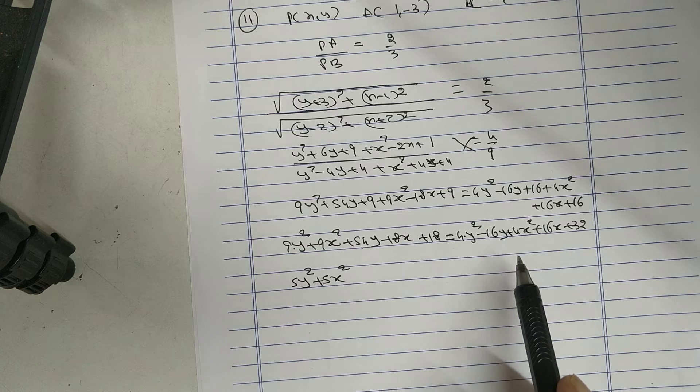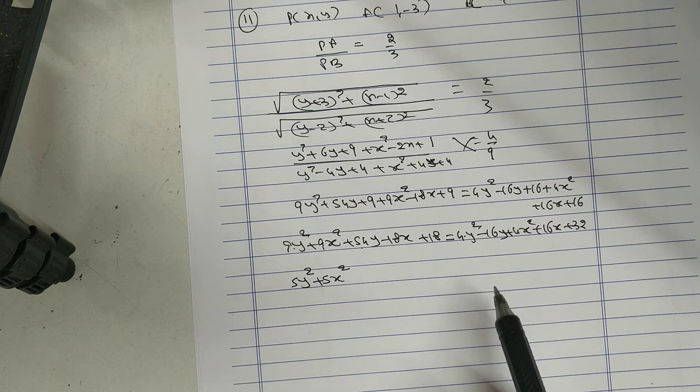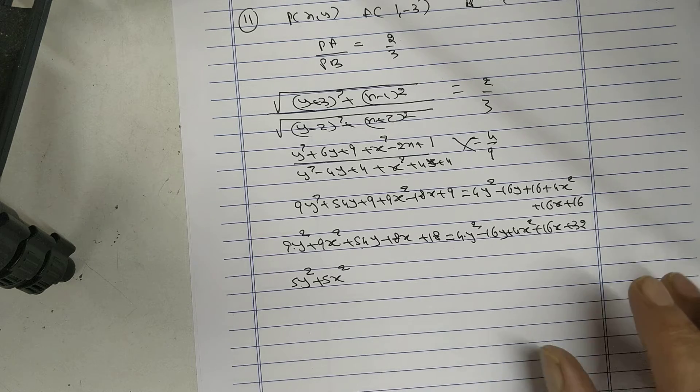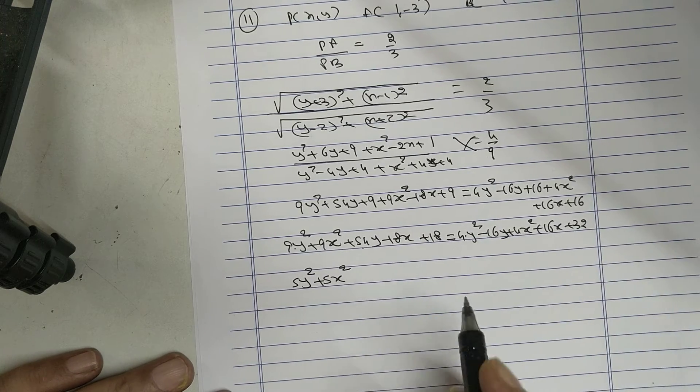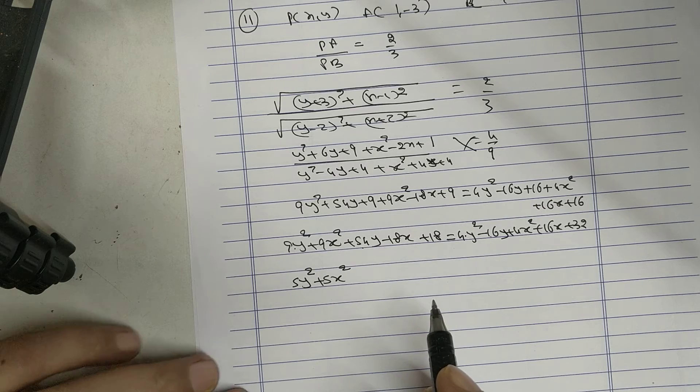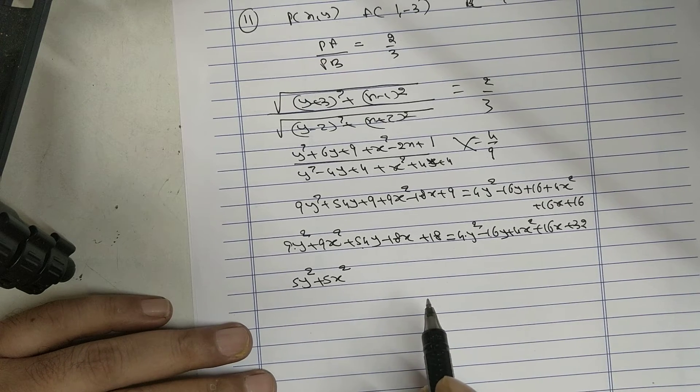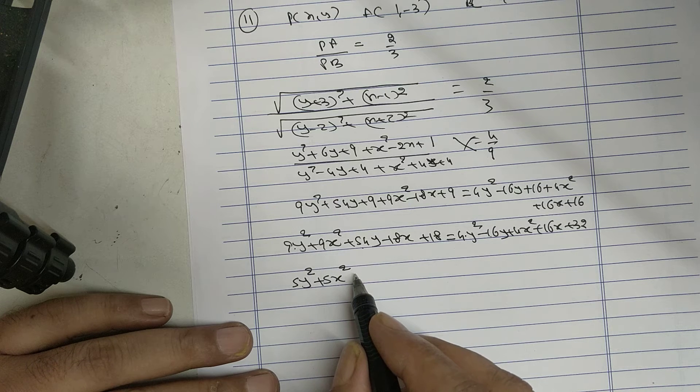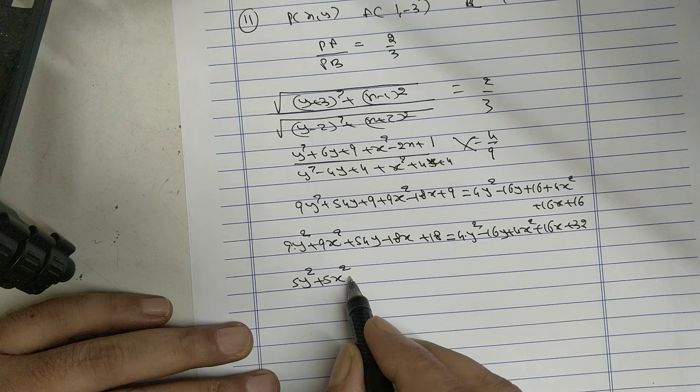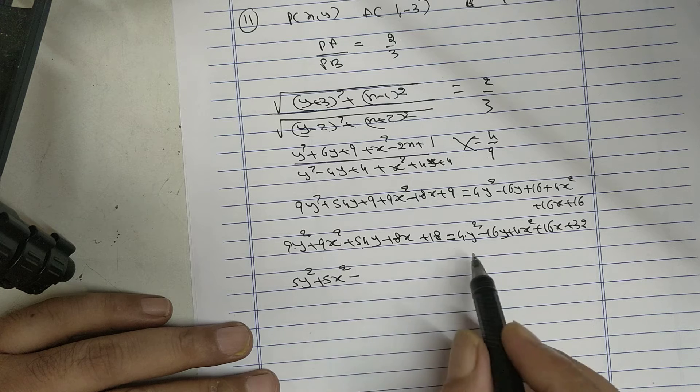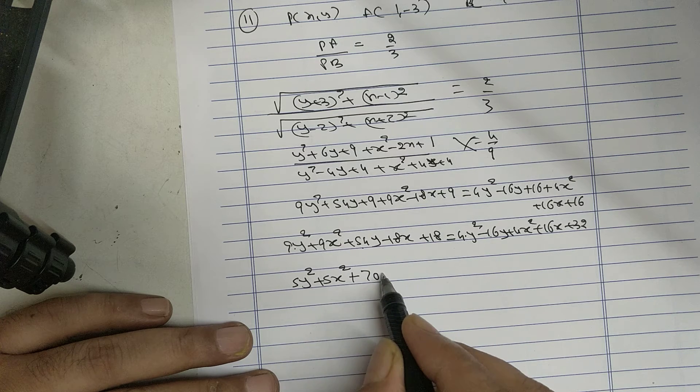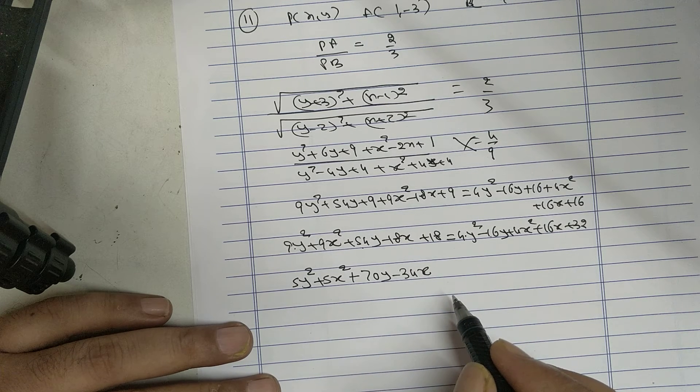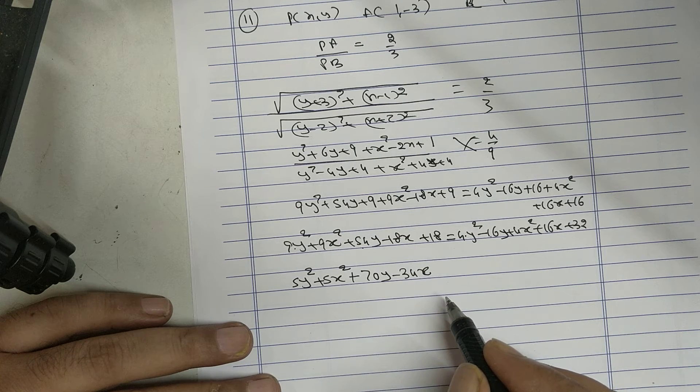So 70Y, I will get, bring all one side, plus 70Y minus 34X and...